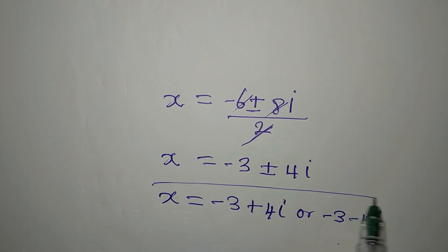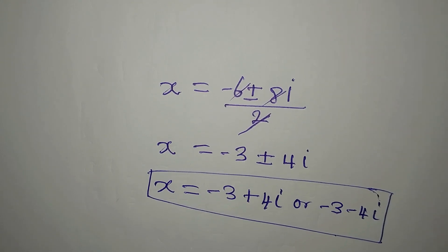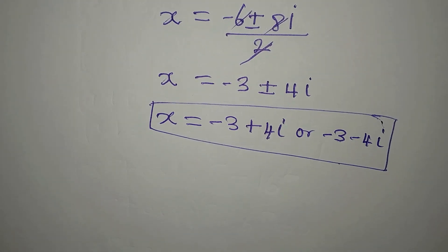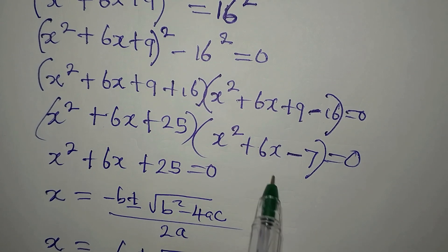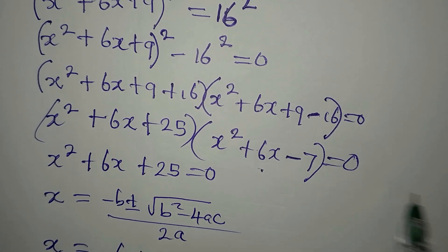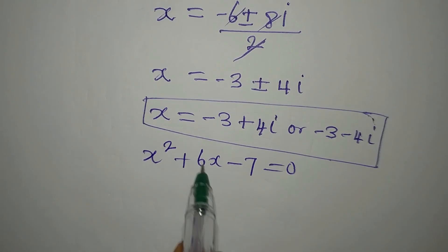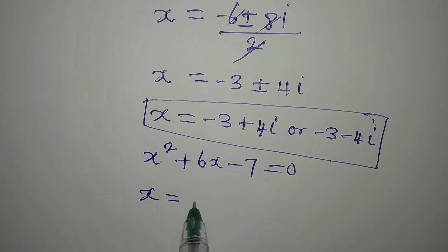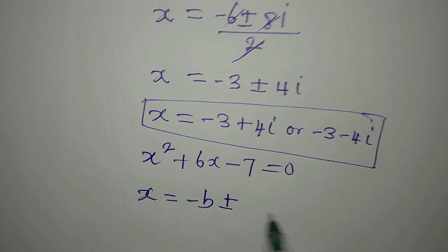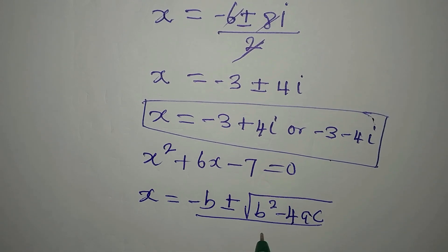From here we have part of the solution. We have left out the second quadratic factor which we have not used. So we equate it to zero and we have a quadratic equation: x² + 6x − 7 = 0. We will still use the quadratic formula to deal with it.